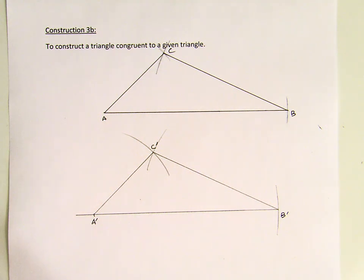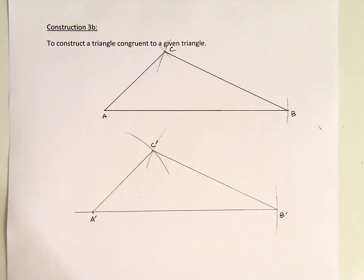Now, this is construction 3B, which is to construct a triangle congruent to a given triangle. Now, make me look.